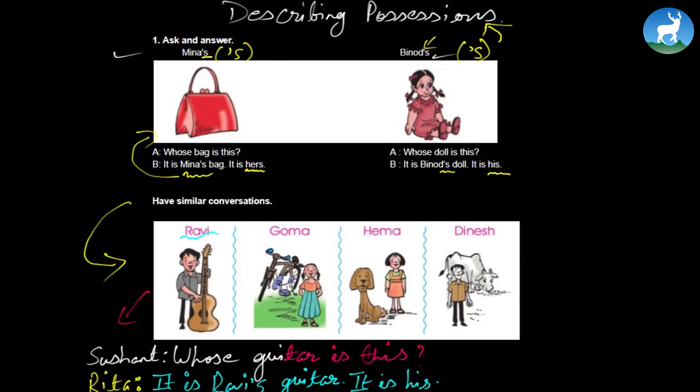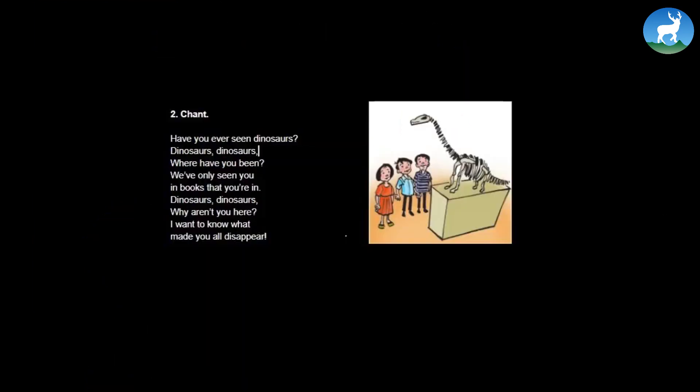Now Susant asks a question. Isn't that a guitar? Yes, that's a guitar. At least to me, that's a guitar. I'm not that much of a musician. Anyways, so whose guitar? Remember, we're here dealing with picture one. So Susant asks, whose guitar is this? Now let's say to which Rita answers. And Rita says, it is very simple. It is Ravi's guitar because the first name is Ravi. Now to show possession, that means to say that the guitar belongs to him, we have to have first name, R-A-V-I Ravi. And then yes, this is Ravi's guitar. It is his. Similarly, you can have a similar conversation for Goma, Hema, and Tidus. Let's move further.